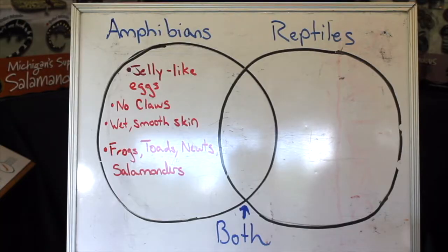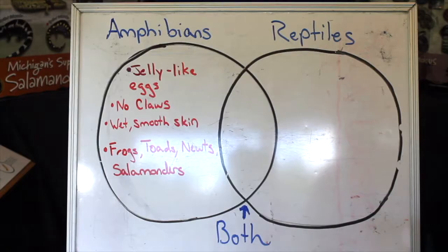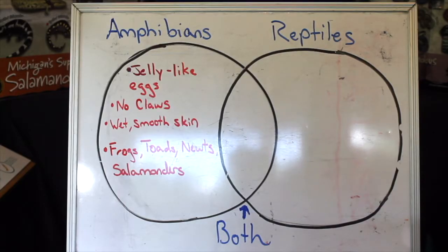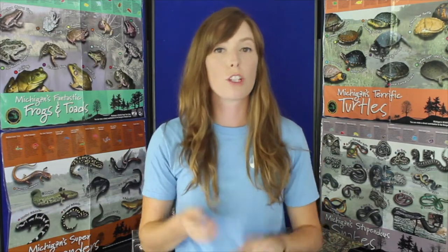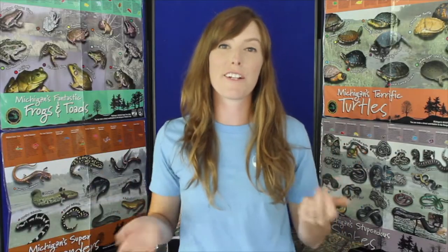While some amphibians have bumps to blend in with their environment, they don't have scales. Rather, they form a mucus or slime-like layer on the top of their skin to help hold moisture or protect their skin if the habitat becomes too dry. The amphibian group includes frogs, toads, newts, and salamanders — all of which we have right here in Michigan.